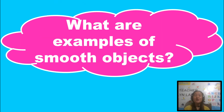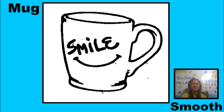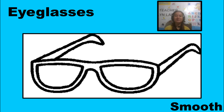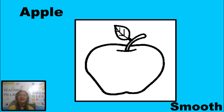Now, we have this question: what are examples of smooth objects? Let's try to find out. Remember that a mug is smooth. Eyeglasses is smooth. Apple is smooth.